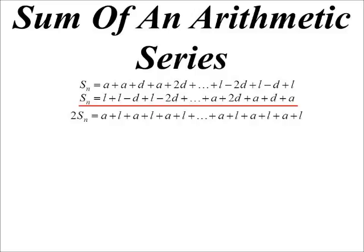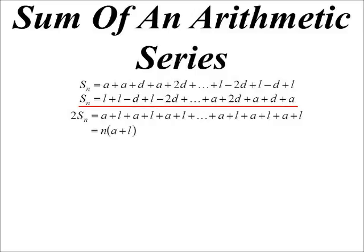Now I've created some simultaneous equations. But you'll notice the way I've written it is the plus d on the top line lines up with a minus d on the bottom line, and a plus 2d and a minus 2d, and so on. So if we add these two equations together, I'll get two lots of the sum is a plus l, a plus l, the d's disappear, a plus l, two d's disappear. And all the way along, I'm going to get all these a plus l's.